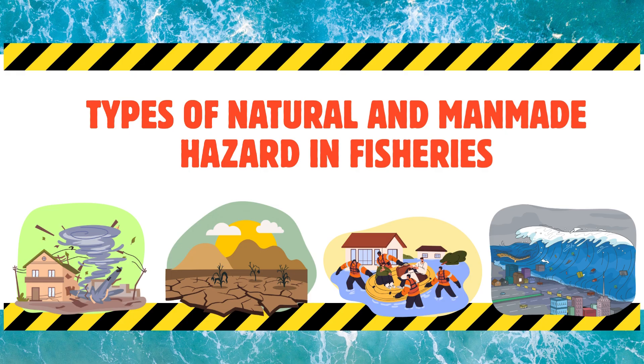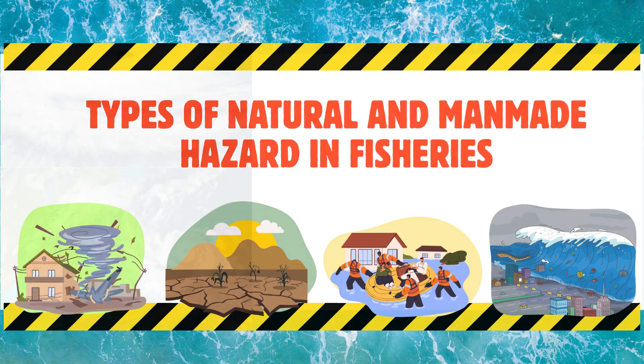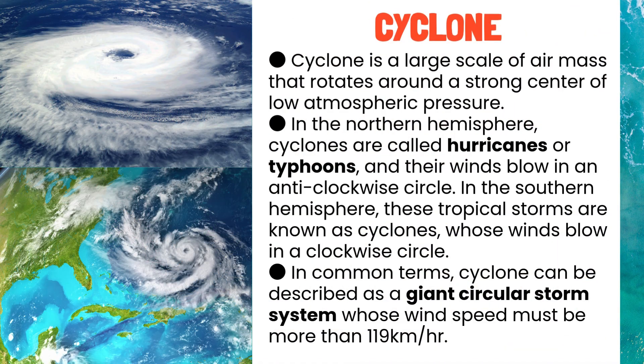Anthropogenic hazards may adversely affect humans, other organisms, biomes, and ecosystems. Types of natural and man-made hazards in fisheries. Cyclone: A cyclone is a large-scale air mass that rotates around a strong center of low atmospheric pressure. In the northern hemisphere, cyclones are called hurricanes or typhoons, and their winds blow in an anti-clockwise circle.